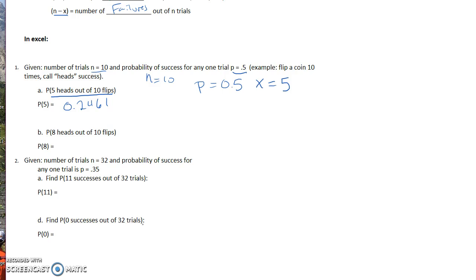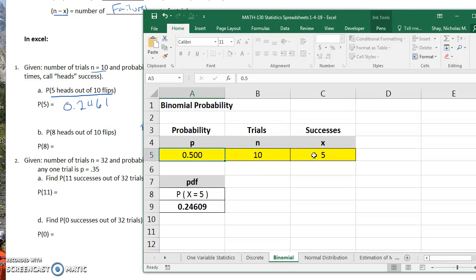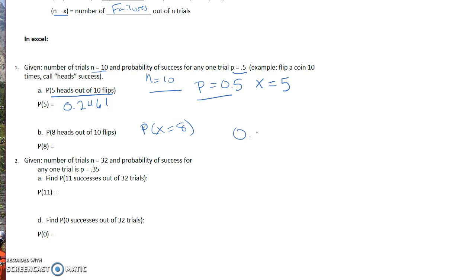All right, the next one says eight heads out of 10 flips. So this time, it's going to be the same N, the same P, but this time, we're going to find the probability of getting eight, so X would be eight here. All right, so I'm going to go to my Excel spreadsheet, and where I see that X, I'm just going to change that five to an eight, and then I'm going to hit enter. And so it's less likely, but it's zero point. All right, I want to just go over a little bit about rounding, so I'm going to write this whole thing out, and we'll round it four places. 0.04395.